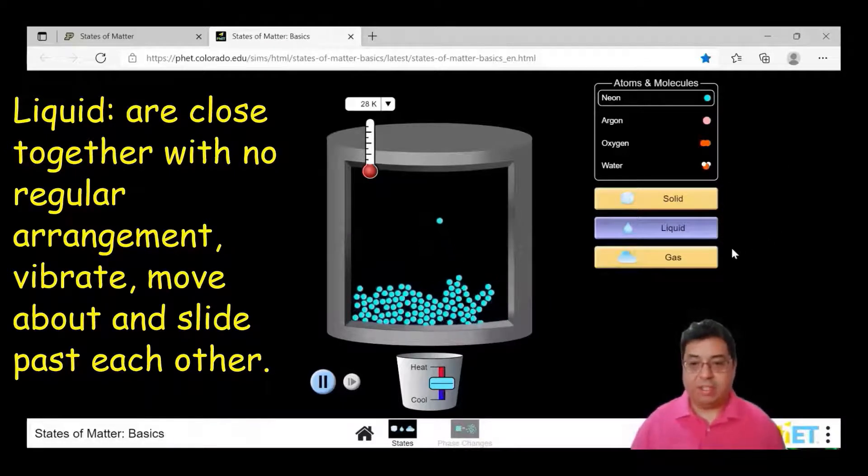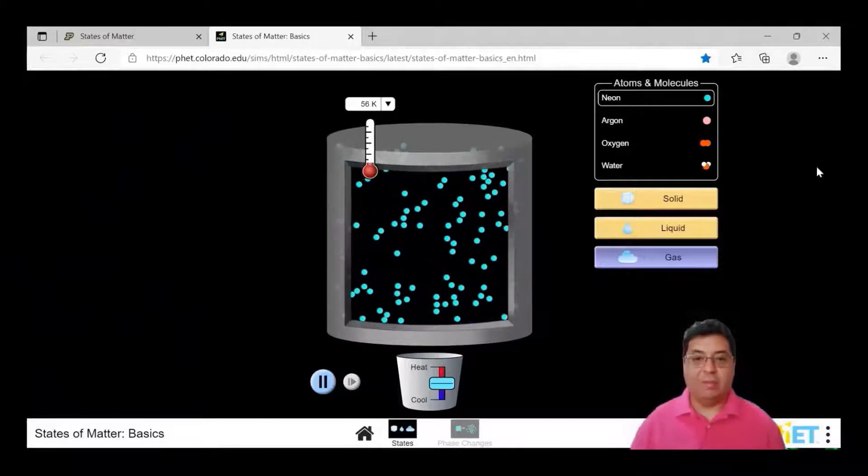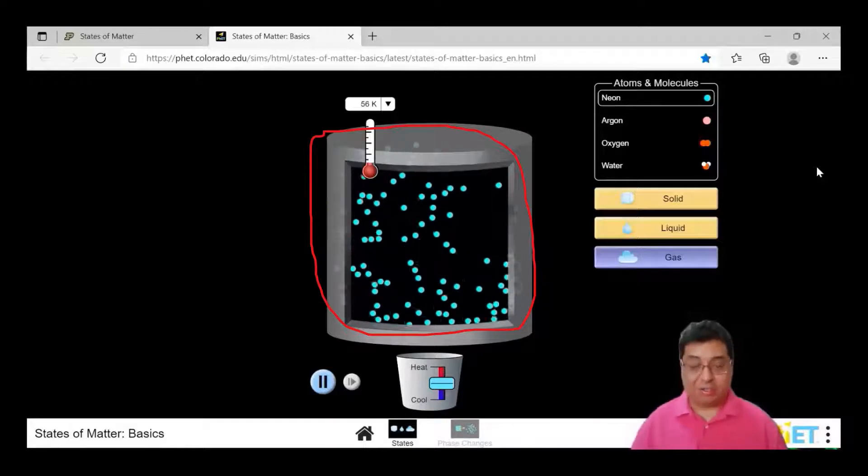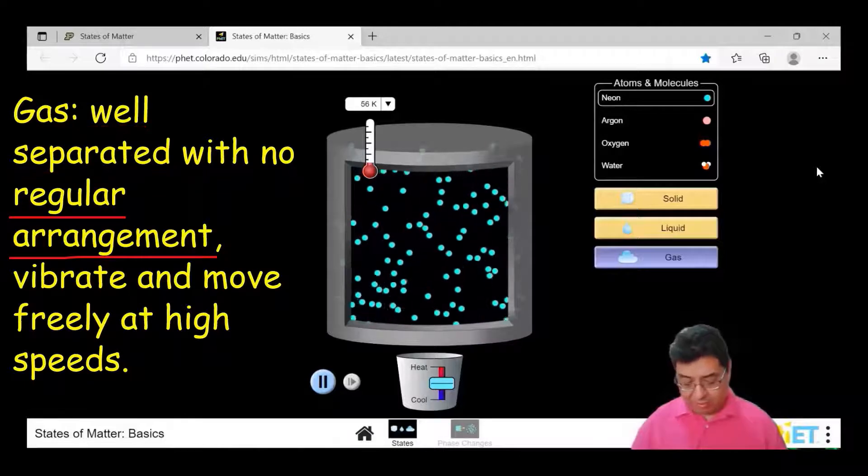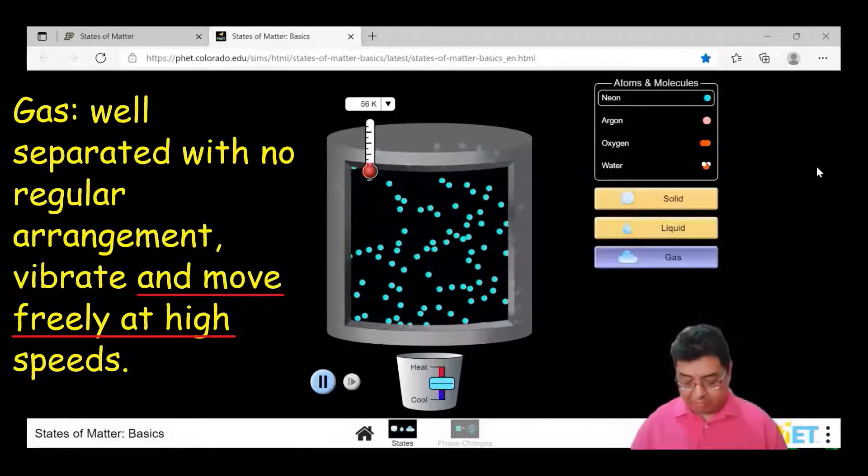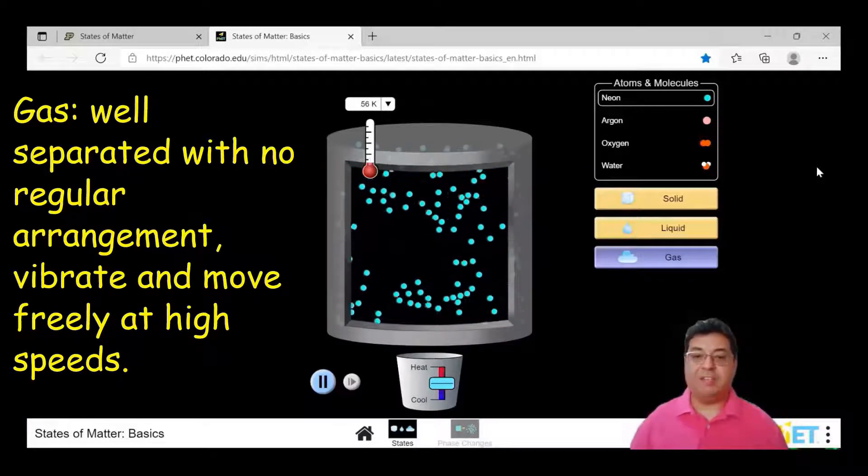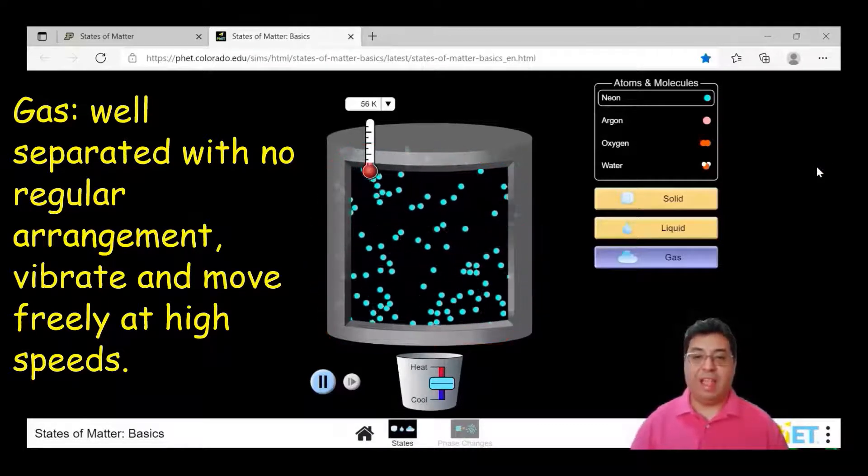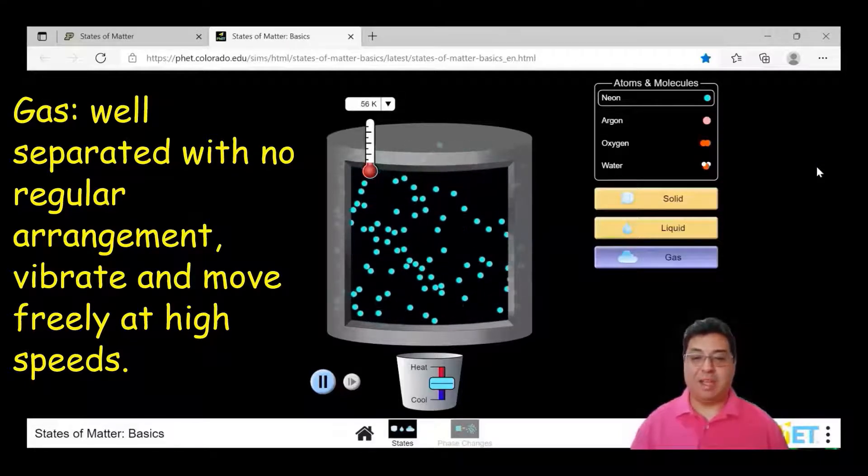I'm just going to click on this here where it says gas. Now if you weren't able to see it on the previous website, I hope you can see it now. This is showing you what gas looks like. Again, they're very well separated with no regular arrangement. They're vibrating as well. They move freely at high speeds here. As you can see, maybe not moving at the fastest speed, but you can see that they're really moving freely and they're moving about here. I just wanted to share this website with you on states of matter, just showing you how you can do this.